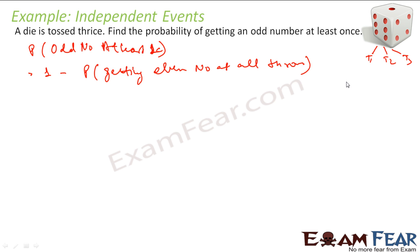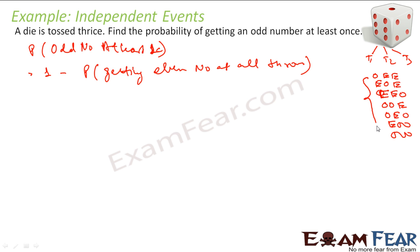Understand this: when you say odd number at least once, this satisfies scenarios like odd-even-even, odd once in three positions, odd twice, and odd all three times. This guy is excluding only one scenario — that is, all even. You add all of them and it becomes the whole sample space.